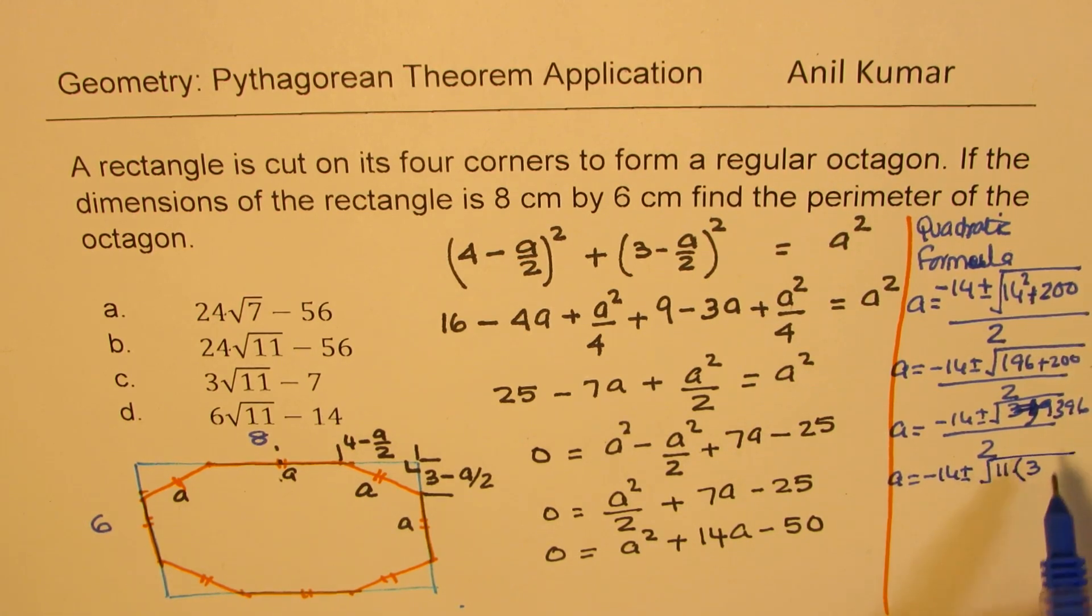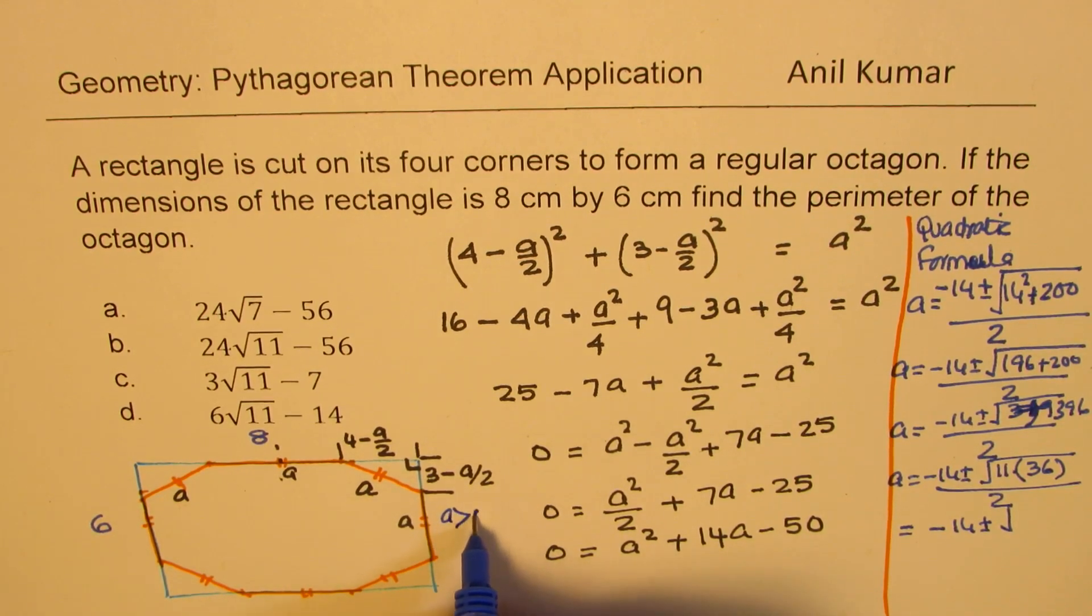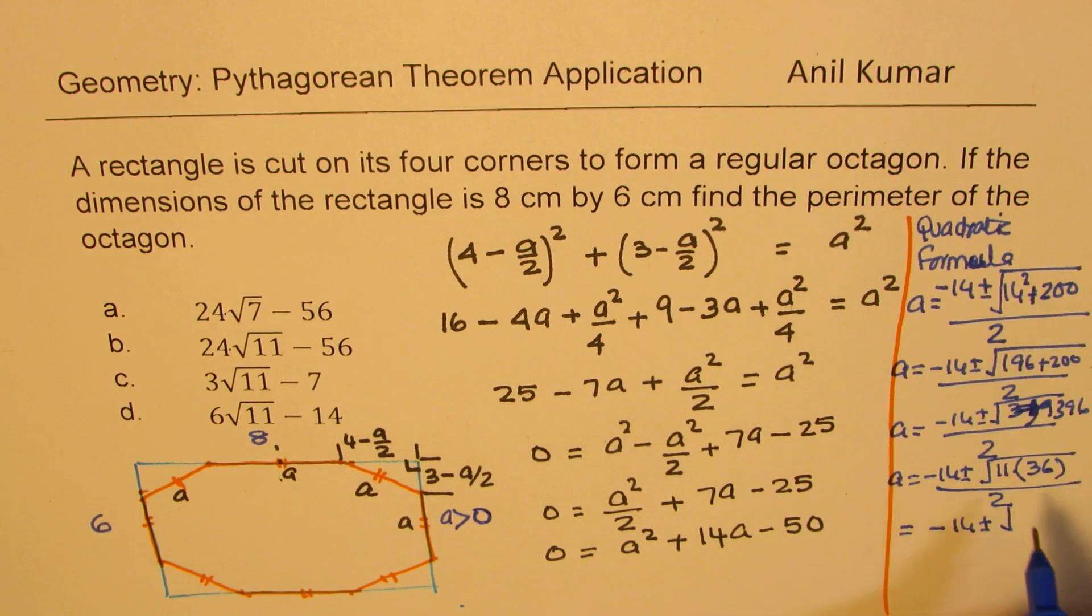Let's write it in brackets, 33, 66 is 36. So we get 11 times 36. And that gives you the answer as minus 14 plus minus. Of course, we'll have to take plus only since A has to be greater than 0. It is positive. So we'll take plus only.